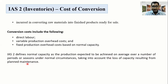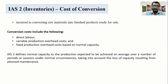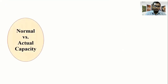For example, plant maintenance. As a production company, on a yearly average, when you have a normal capacity, we allocate fixed overhead based on normal capacity. IS-2 provides a guideline on cost of inventory and normal capacity. Let's look at the example of normal versus actual capacity.